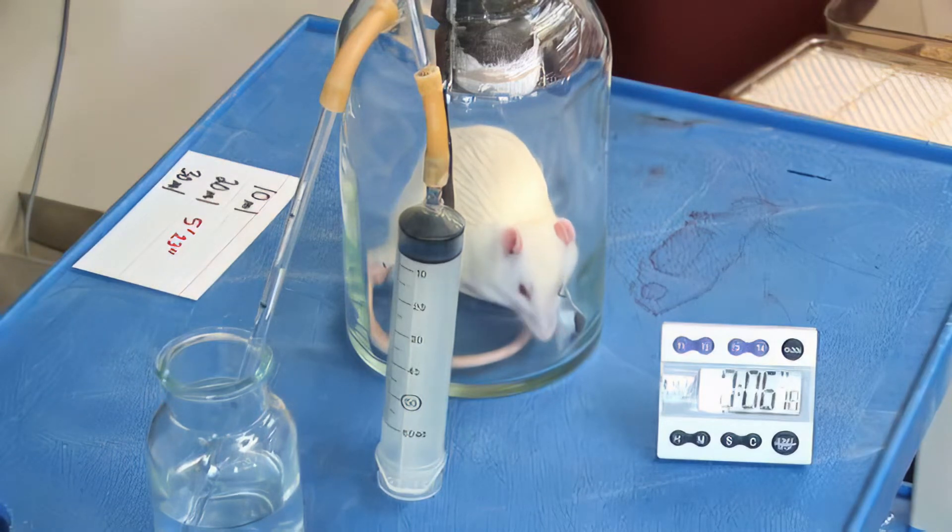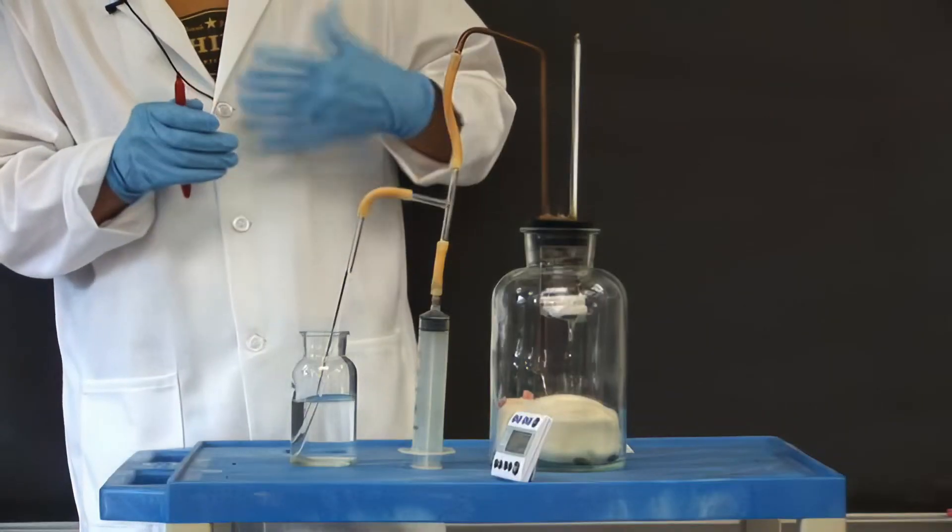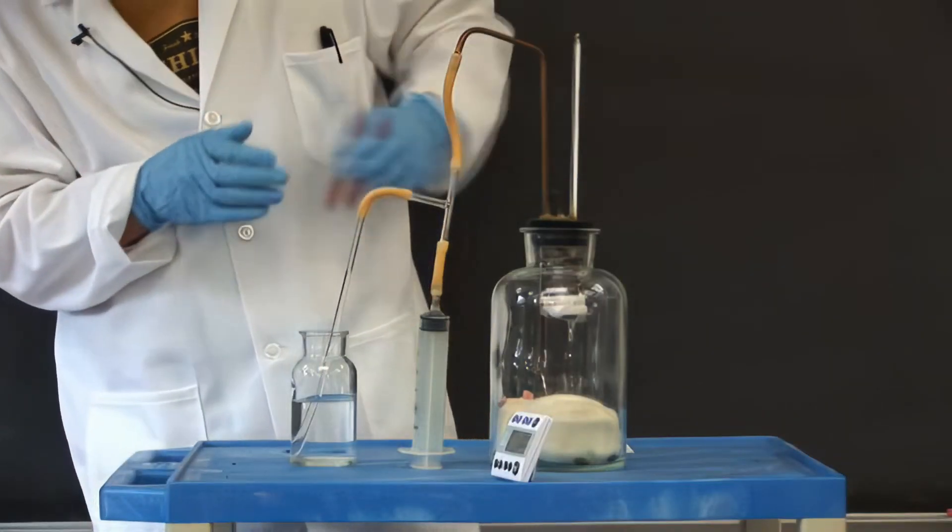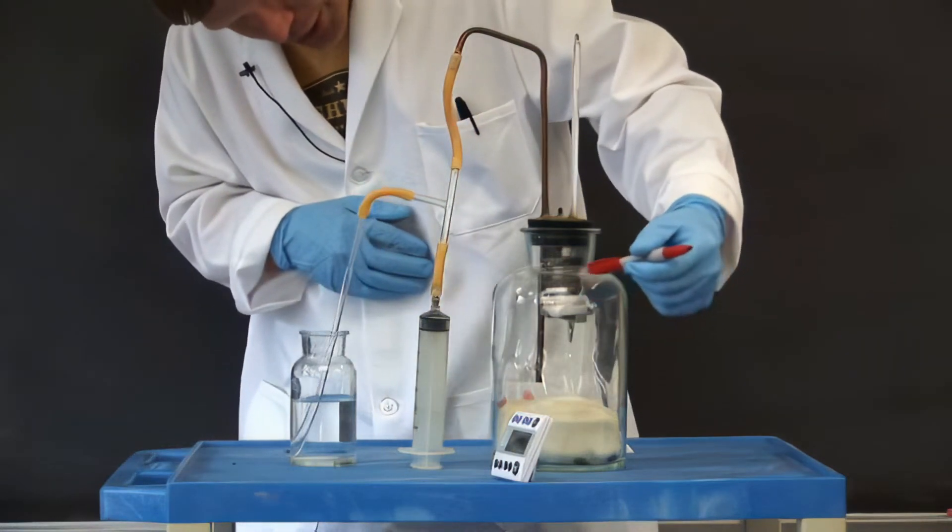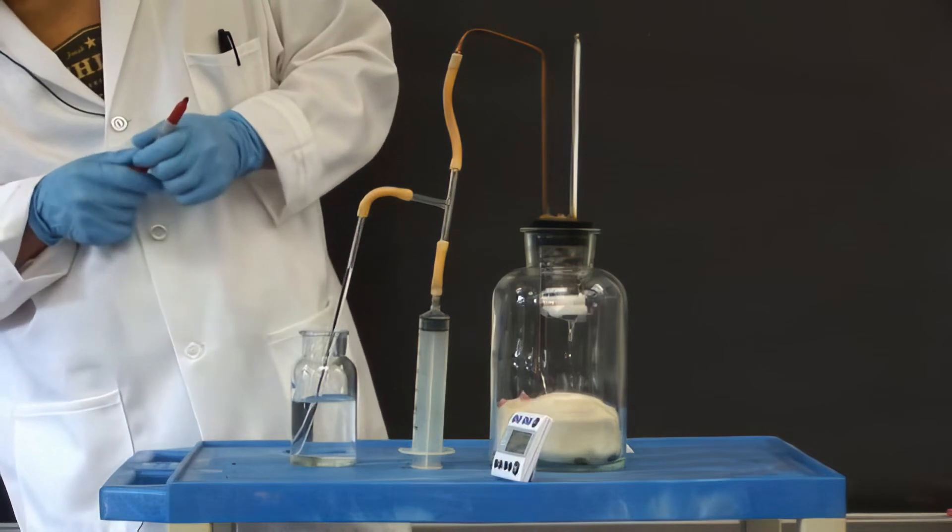And again, to reiterate, as the rat is breathing and consuming oxygen, the CO2 that's being evolved is being absorbed by the soda lime, which is contained in this canister wrapped in gauze. So there's a net reduction in air pressure as oxygen is consumed.